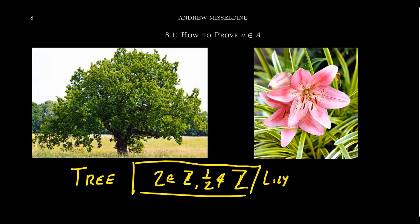Every set has a mathematical property which determines whether an element belongs to it or not. In order to determine whether a specific element belongs to the set, we simply need to check if the defining membership property of the set is satisfied. This defining membership is equivalent to checking a definition. Sets and definitions are basically the same thing.